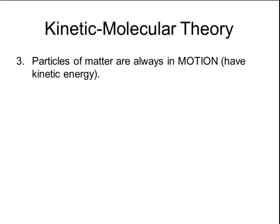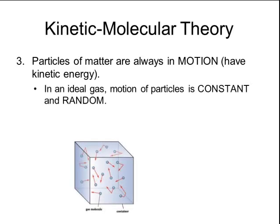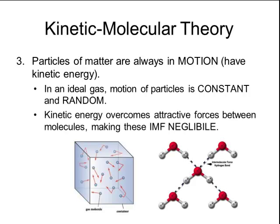The third tenet states that particles of matter are always in motion, and because they're always in motion, they have kinetic energy. In an ideal gas, the particles of the gas are constantly moving, and not only is their motion constant, but within a closed container, the motion of the particles is completely random. Because the particles are constantly moving, they have a significant amount of kinetic energy, and that kinetic energy is large enough to overcome the attractive forces between the molecules.